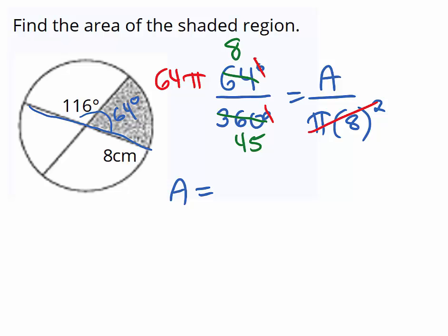So now I have 8 times 64, which is 512, and then put the pi on there. That's over 45. And our units are in centimeters, so area is centimeters squared.